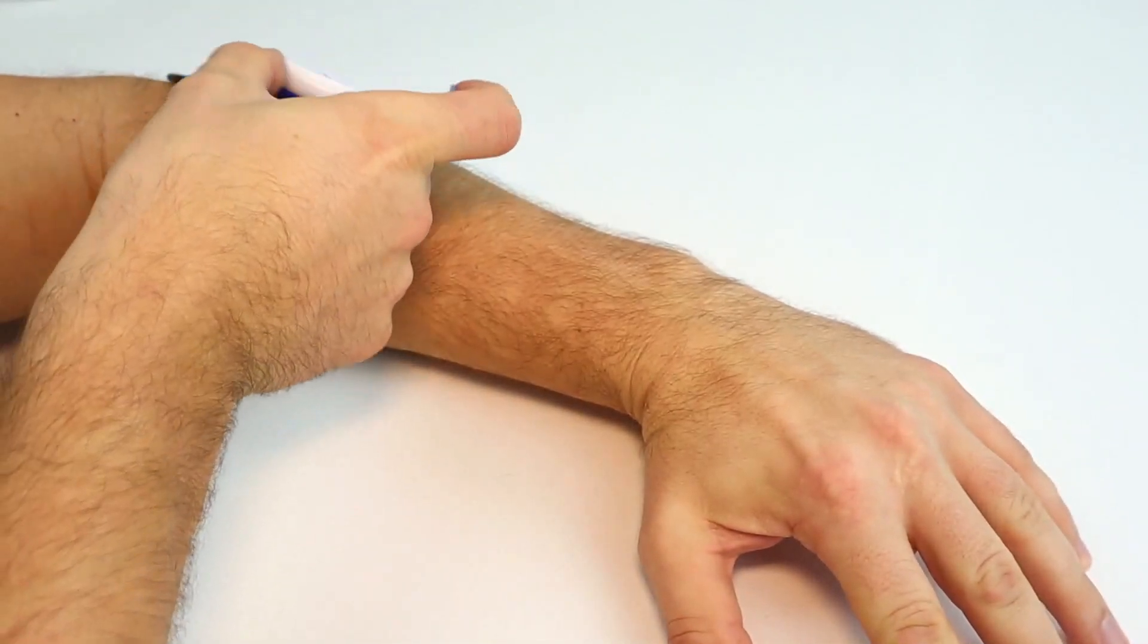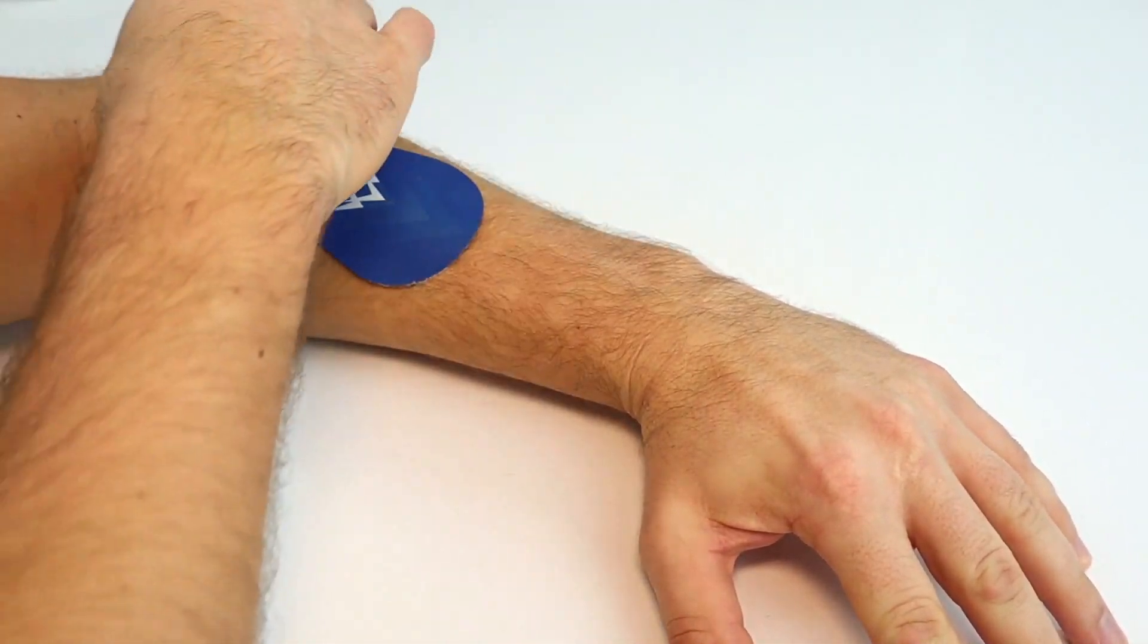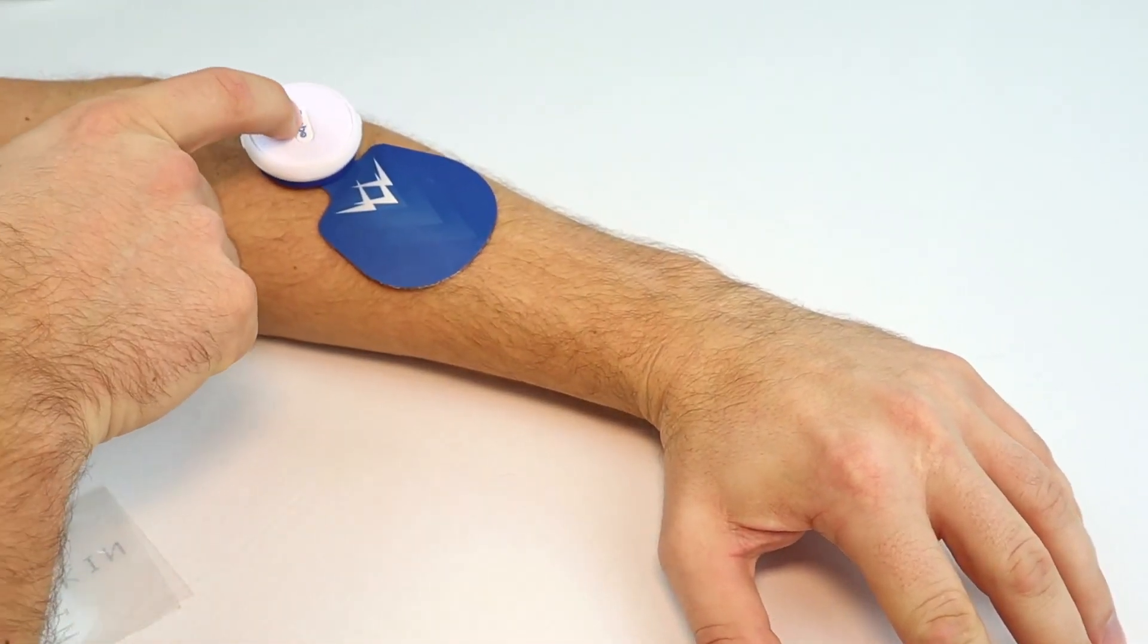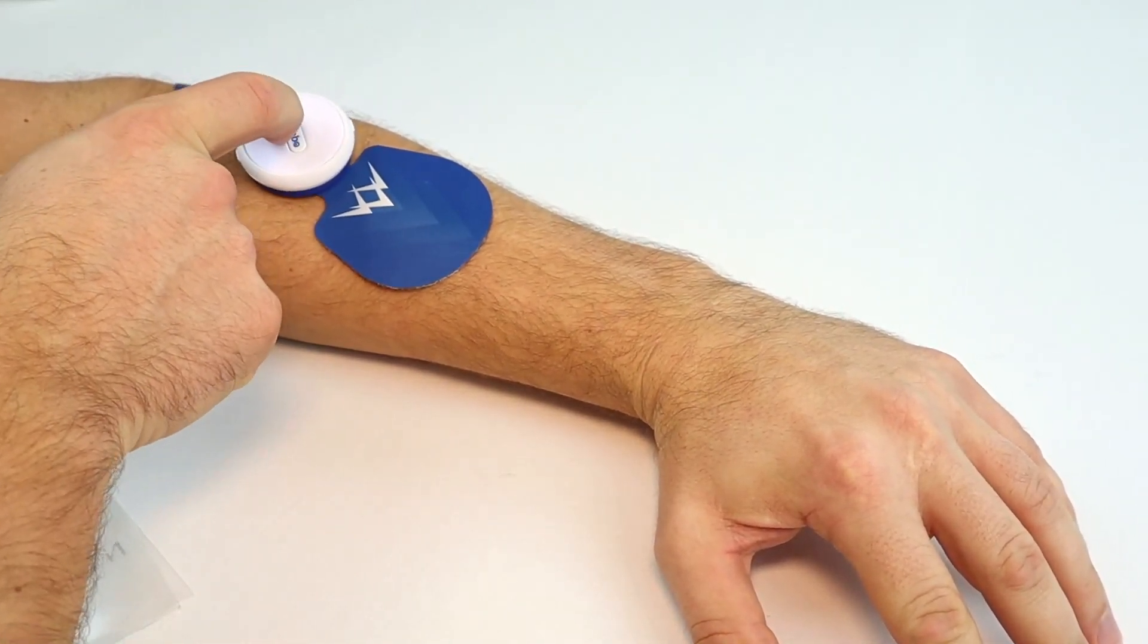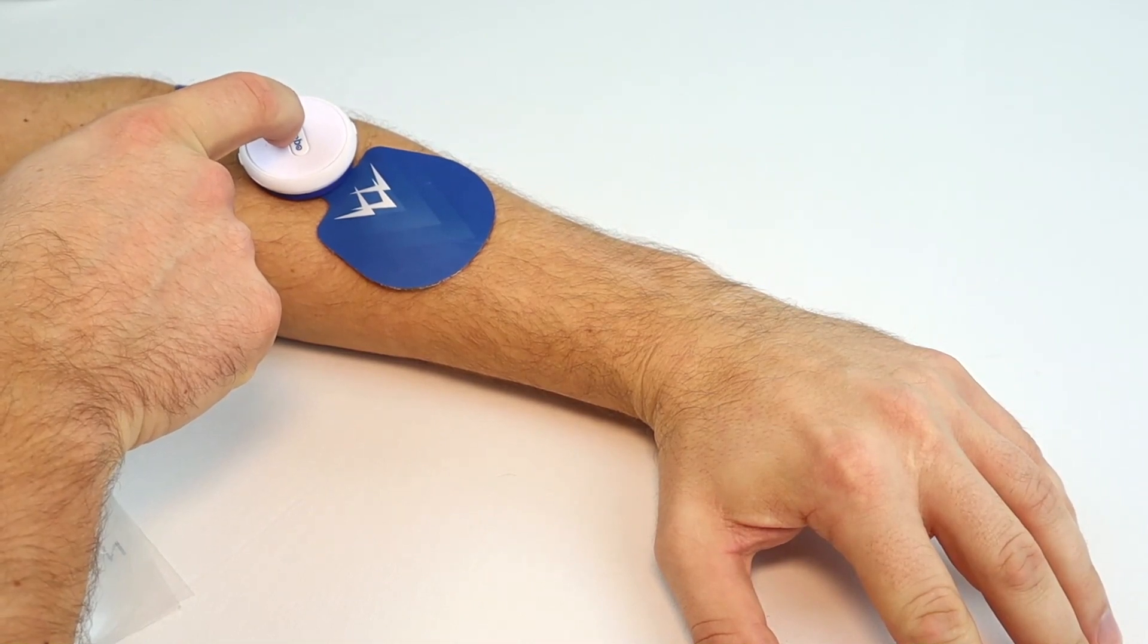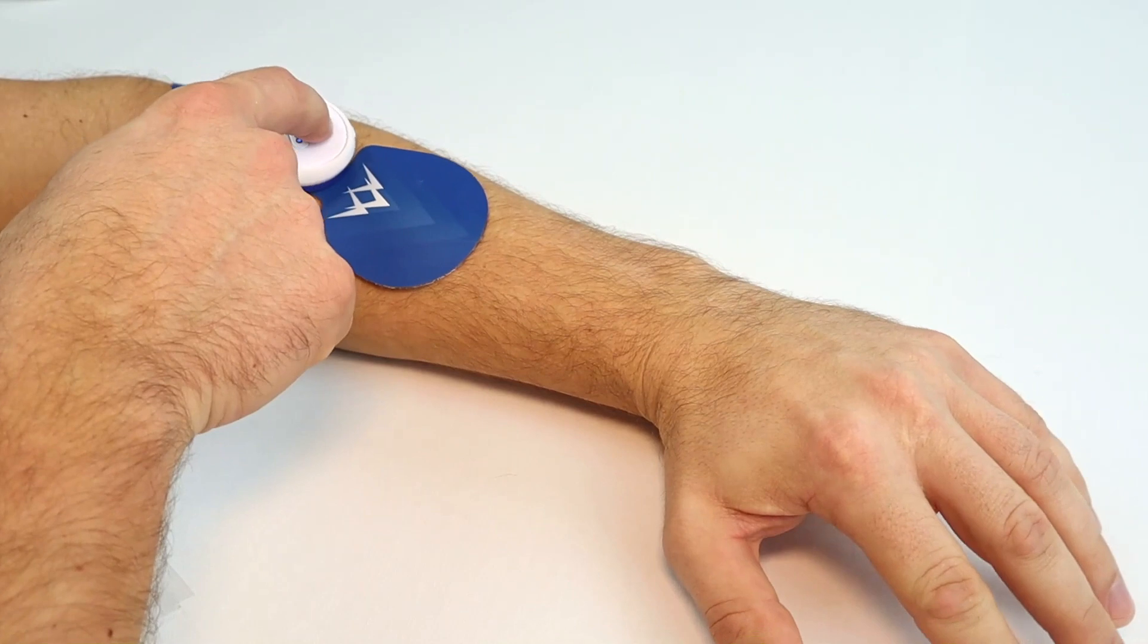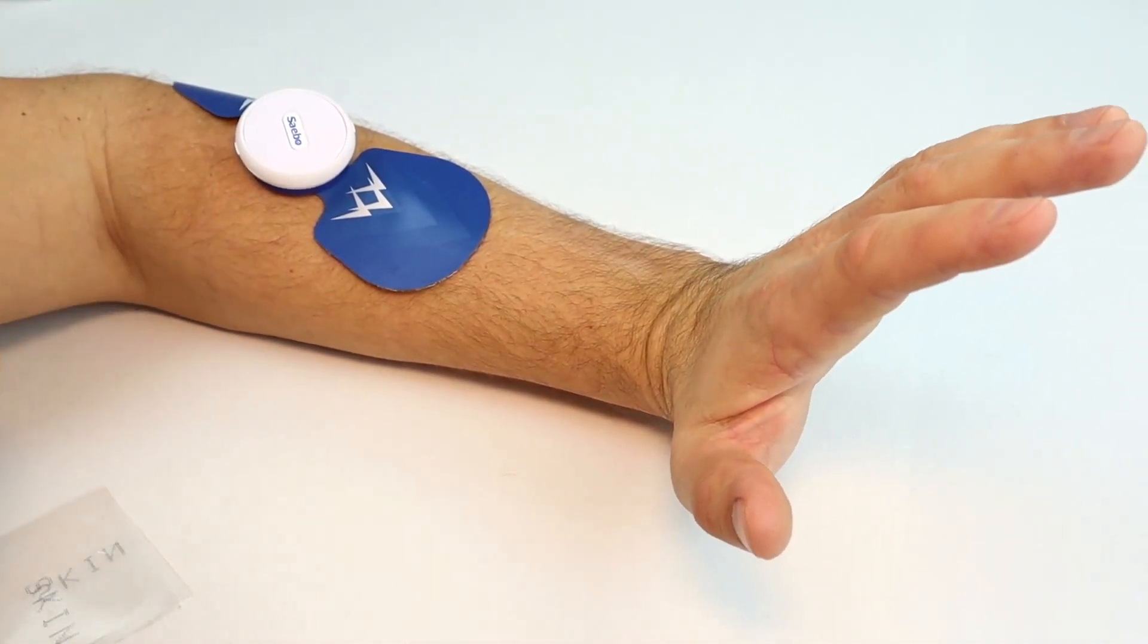Next, place it on a muscle group that you want to work. Currently I am putting it on the extensors of my hand. Hold the Sable button down for three seconds until you hear a beep, and you can also see a blue light. Then push the button up, and you have electrical stimulation.